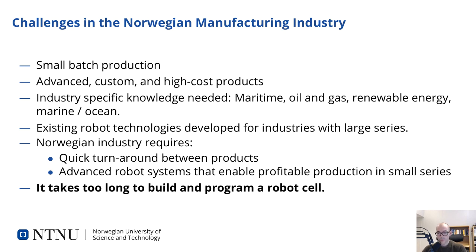In the Norwegian manufacturing industry, we typically have small batch production of advanced, custom, and high-cost products, where industry-specific knowledge is needed. Important industries include the maritime industry, oil and gas, and marine and ocean industries, and last but not least, the renewable energy industry. Existing industrial robot technologies have been developed for industries such as car manufacturing, with high volume production and slow turnaround between products. But the Norwegian industry requires quick turnaround between products and advanced robot systems that enable profitable production in small series. The main takeaway is that it takes too long to build and program a robot cell.